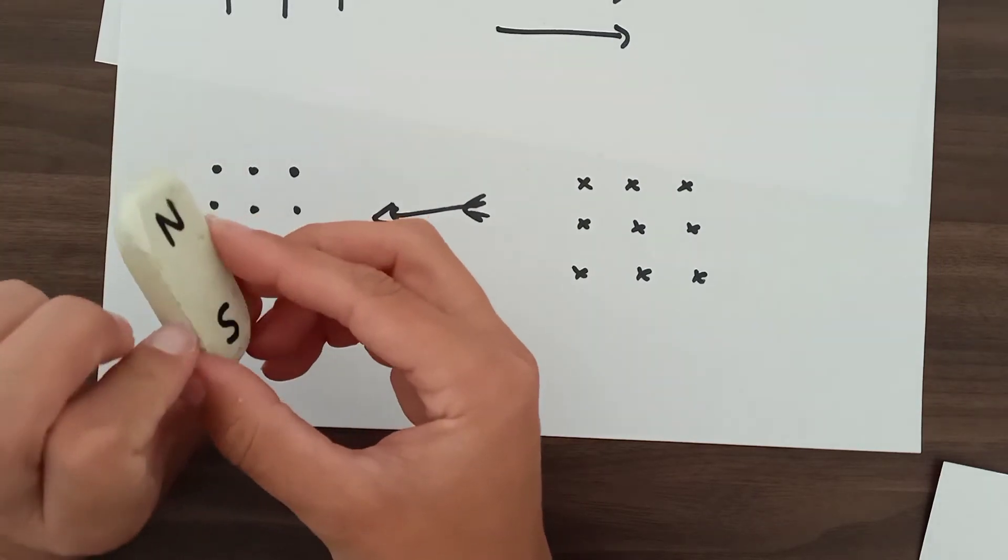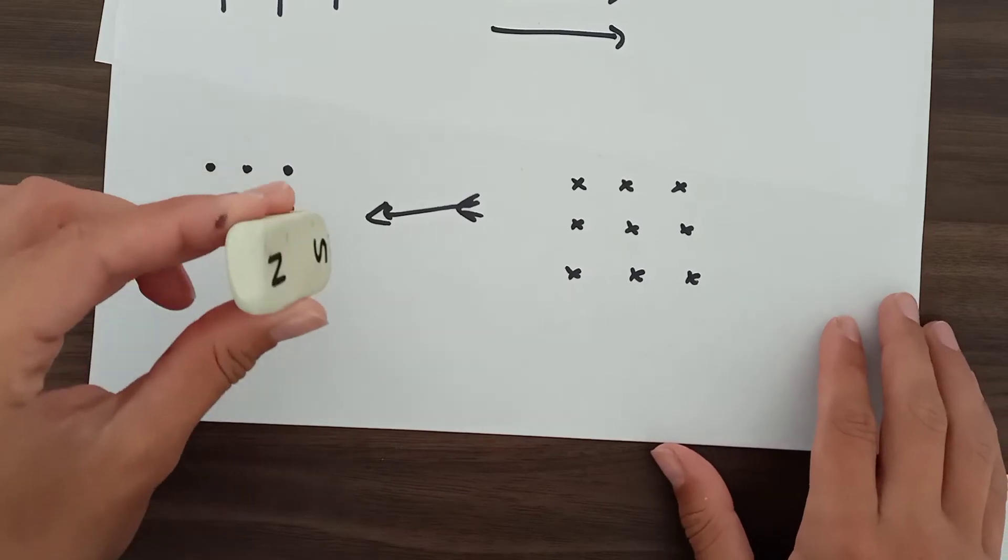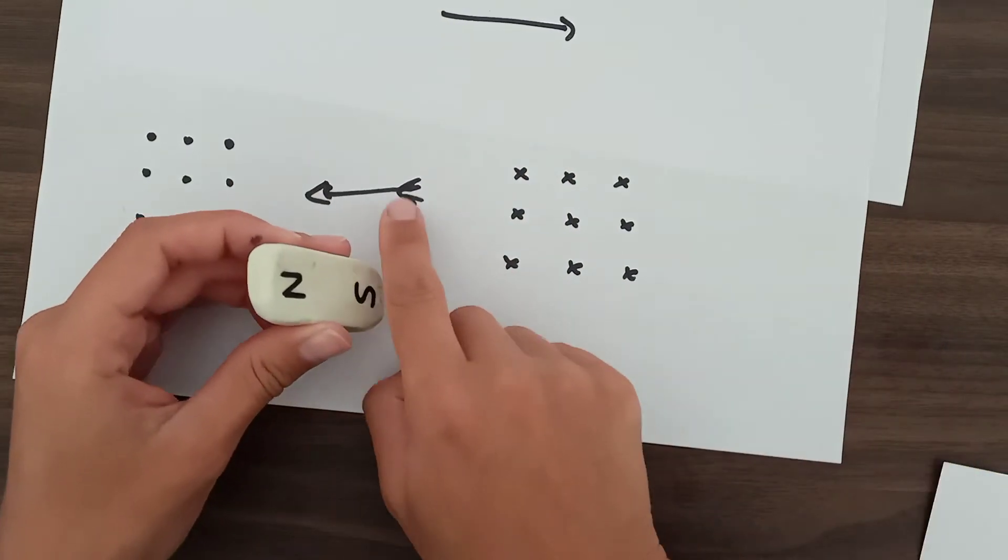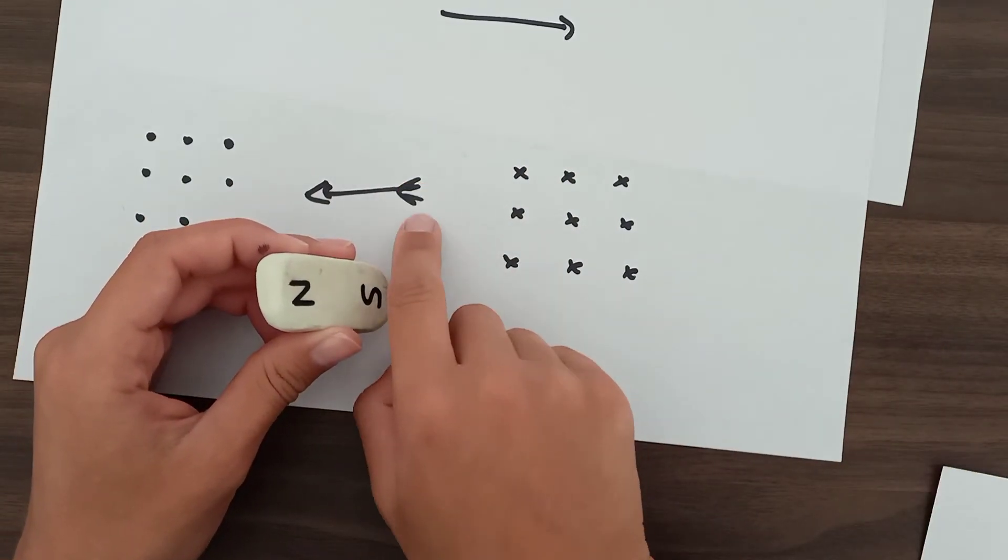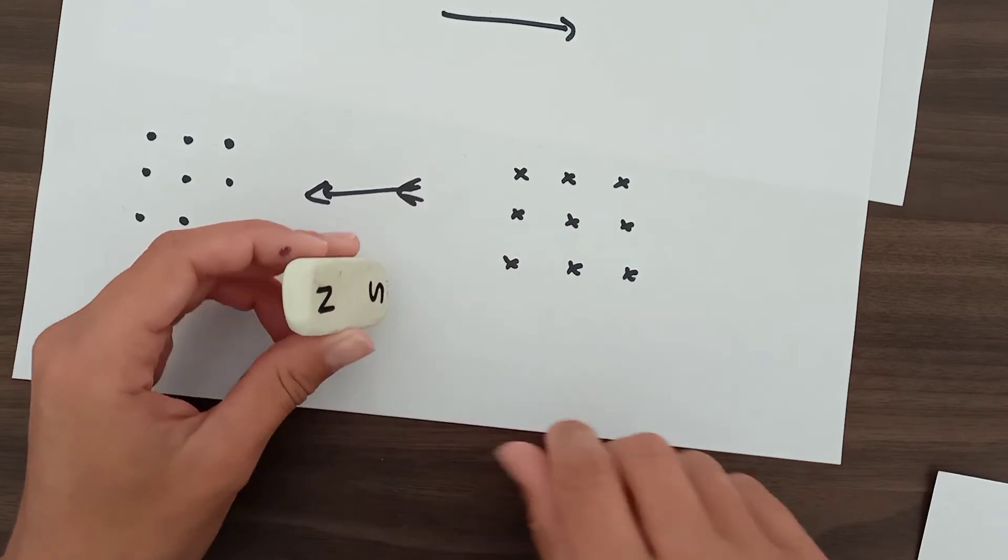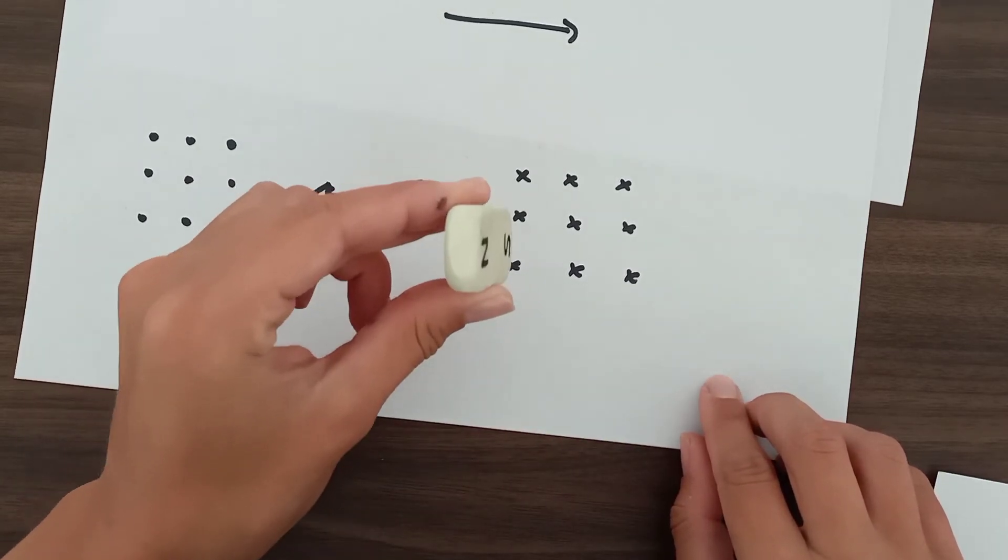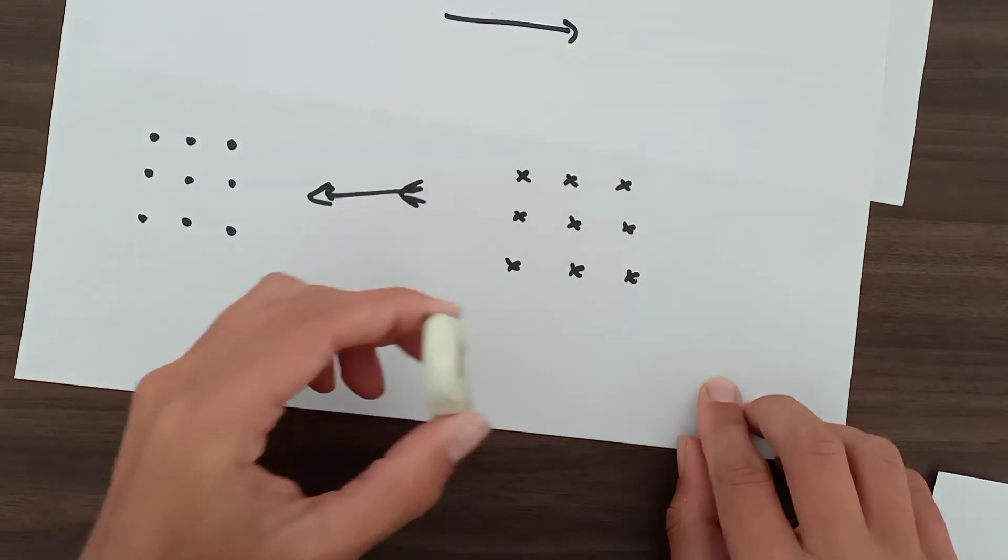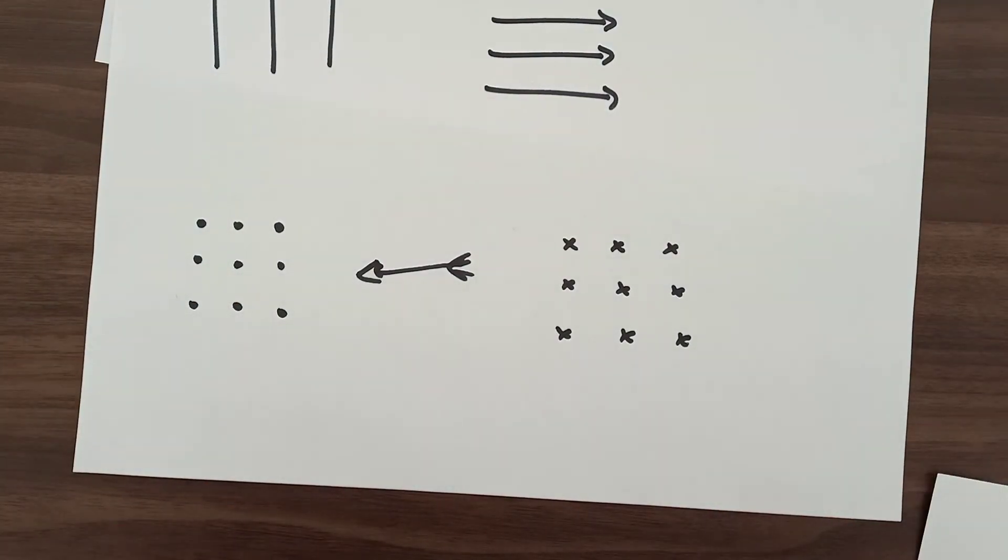But if we turned our magnet around and we had it going the other way, going into the page, we would maybe see the arrow moving away from us. We might see the feathers of the arrow. So we might see some little crosses. And that is just one way we can represent magnetic fields on paper.